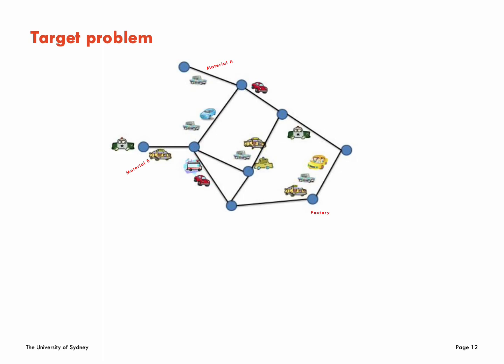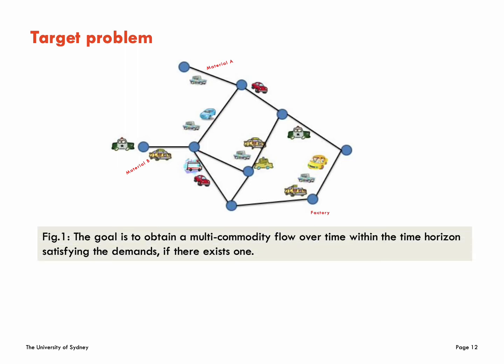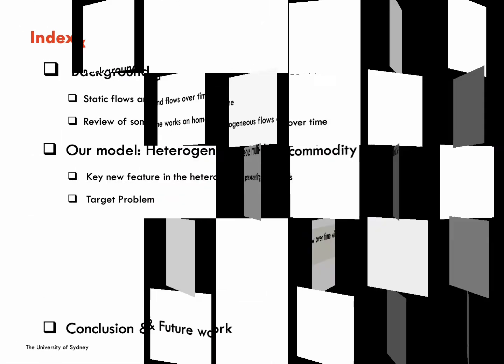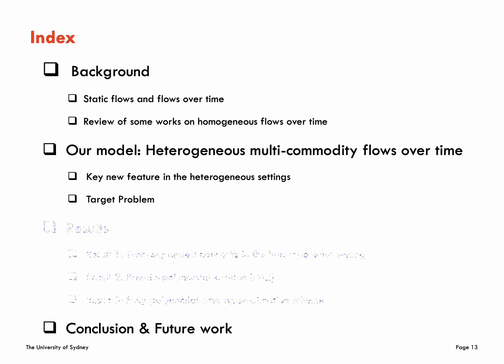Clearly, the hetero problem is closely related to the quickest version of the heterogeneous multi-commodity flow over time problem, which asks us to find a multi-commodity flow that satisfies the demands of all commodities from their sources to their respective destinations within the minimal time horizon.